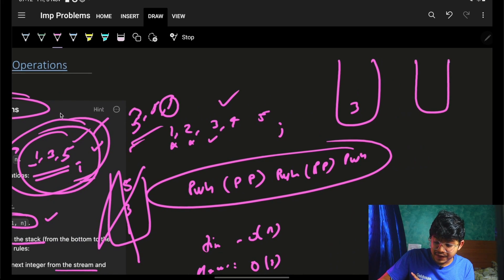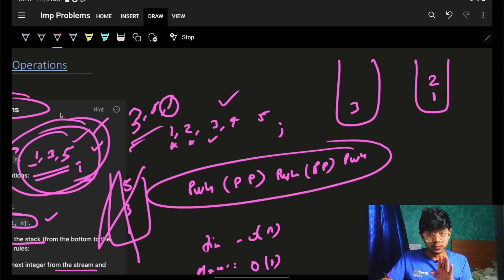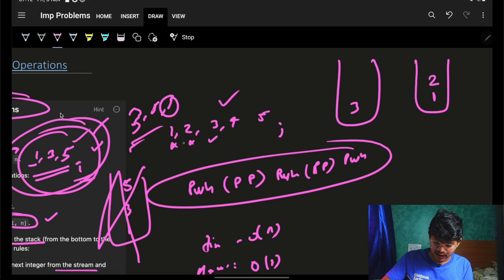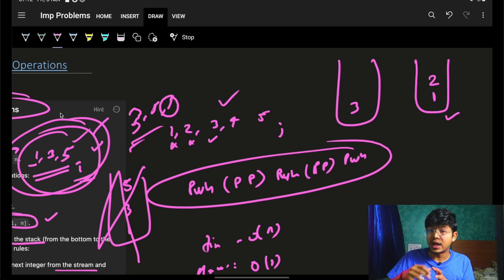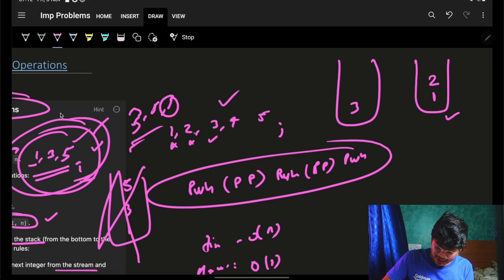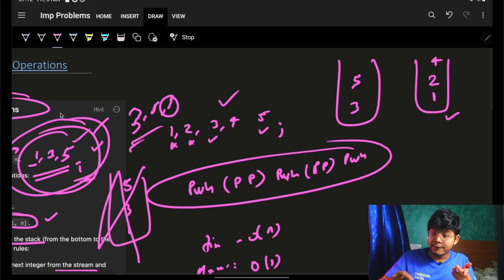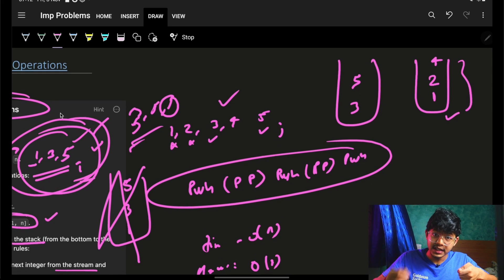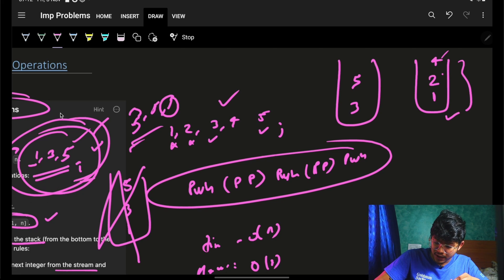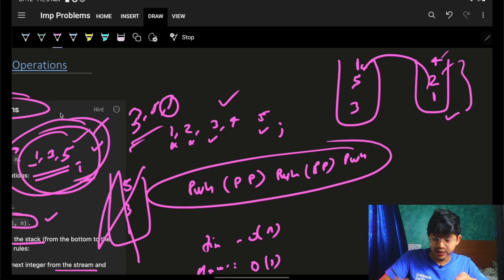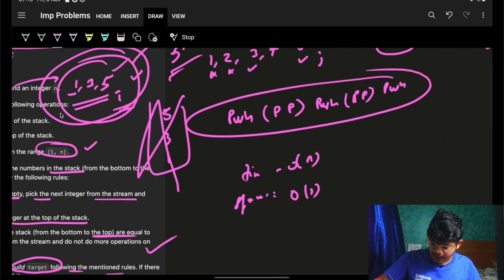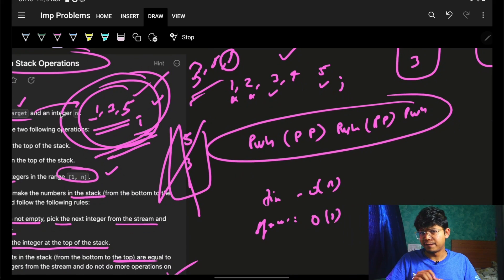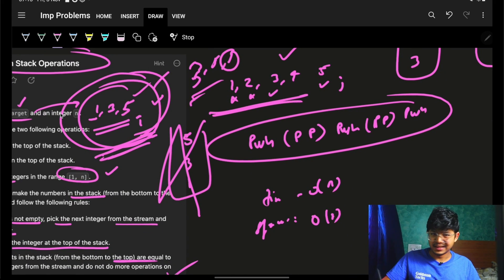For the follow-up, if the target is [3, 5, 1], we'd skip 1 and 2, push 3, then push 4 and pop, push 5 and pop. Then we'd need to check in the auxiliary stack for the location of 1, pop out elements until we reach it, and push it back into the main stack. That's the likely follow-up. For the current problem, we simply iterate on the target and stream.